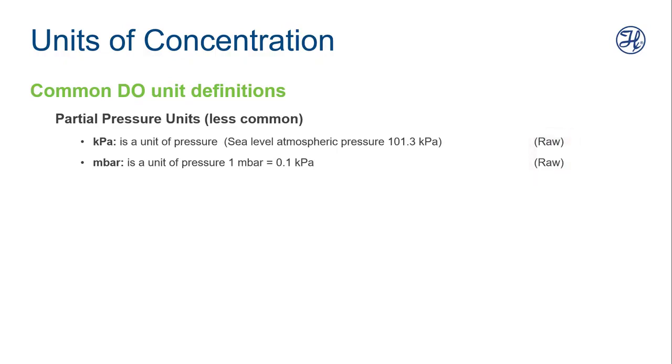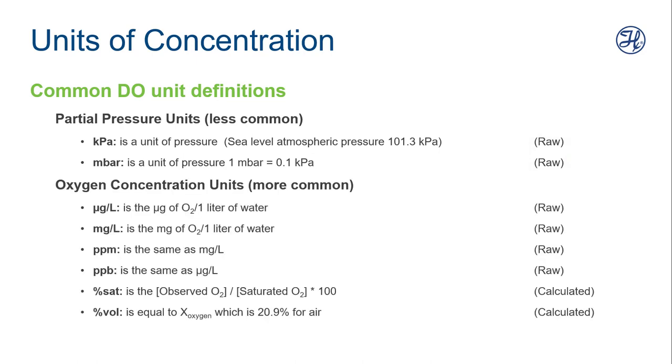But most people use oxygen concentration units, so they're a little bit more common. Here are some that you might be familiar with. We have micrograms or milligrams per liter, which are related to the dissolved oxygen in water, in one liter of water. Those are equivalent to PPM and PPB, and these are actually raw measurements. But then we have percent saturation, which is very commonly used, and percent by volume. These are calculated units, so they factor in the value of atmospheric pressure that's stored in the sensor.